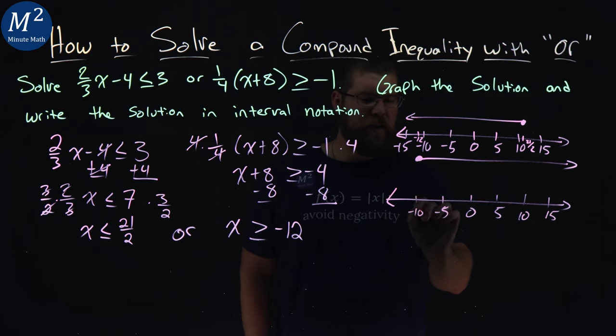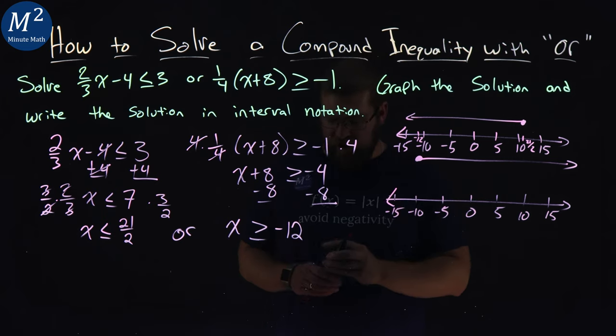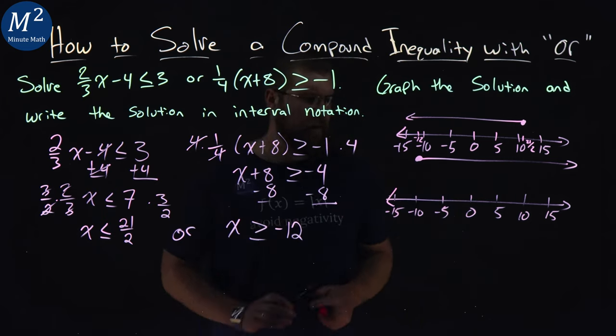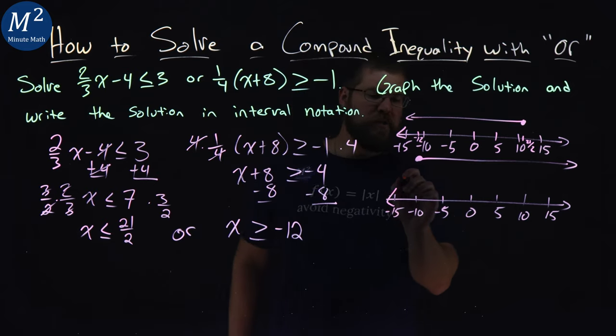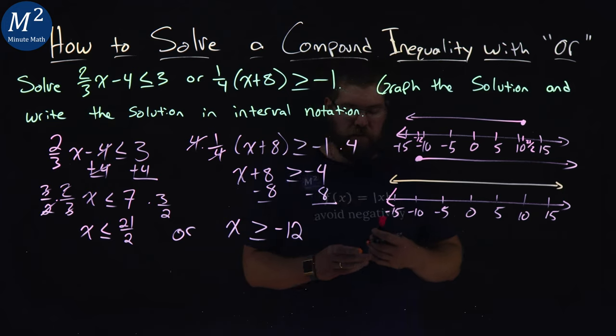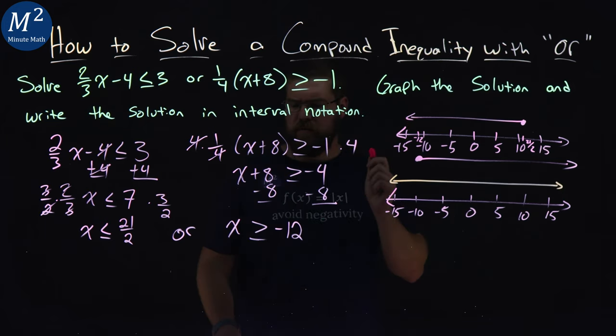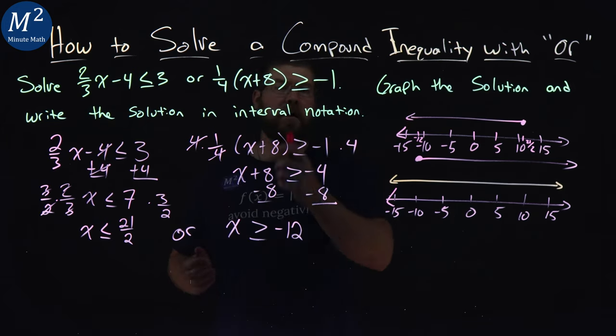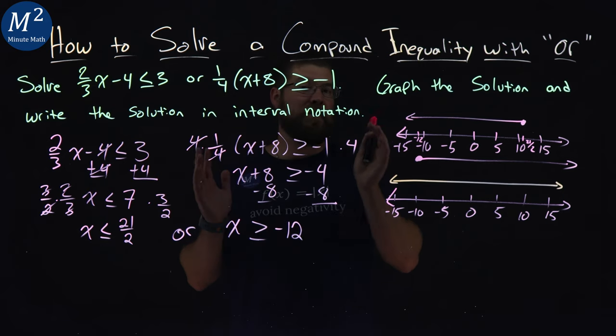And then negative 5, negative 10, negative 15. I'll use a different color so we can see it here. This would actually be on the number line in both directions. Infinity in both directions there.